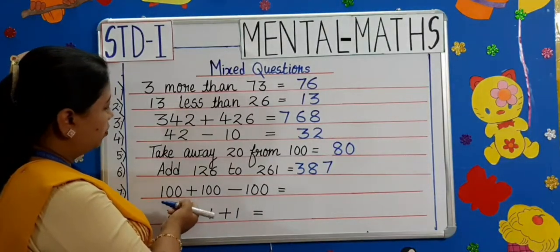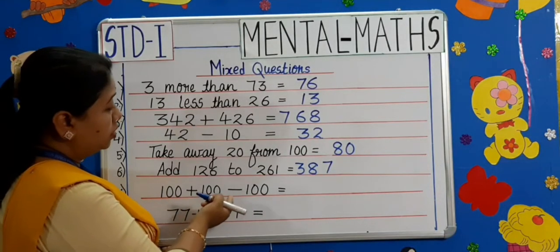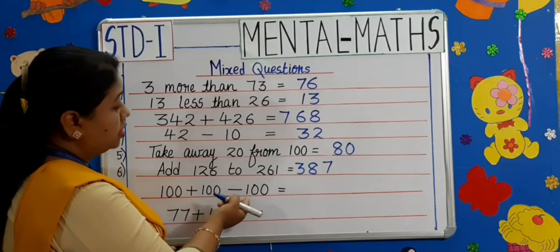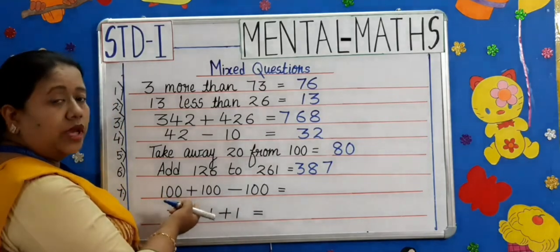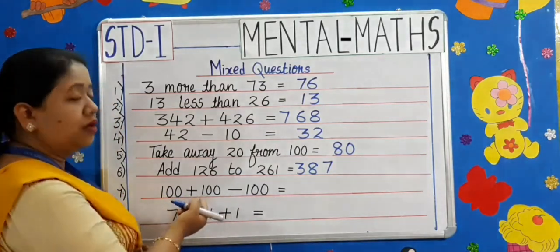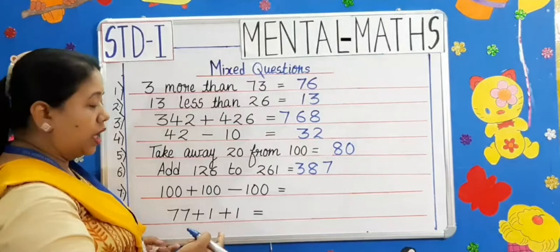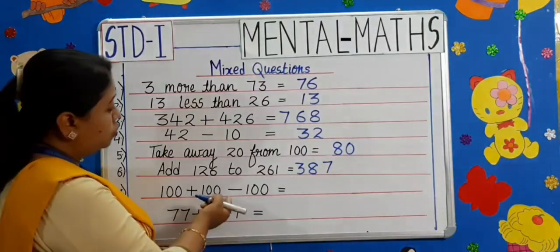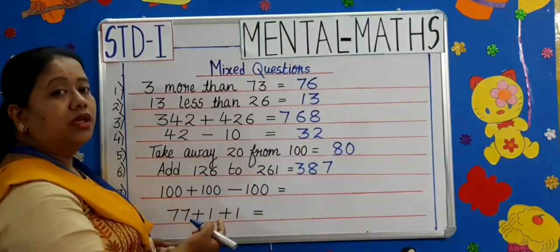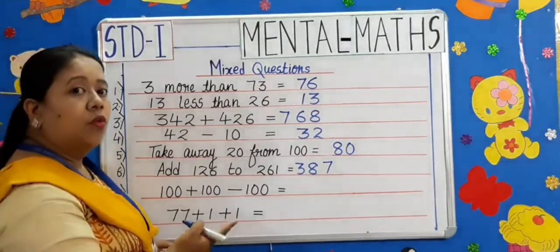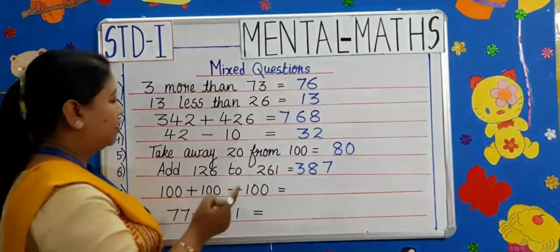Moving on to the seventh one: 100 plus 100 minus 100. 100 plus 100 is 200. 200 minus 100 is 100. Yes, correct!